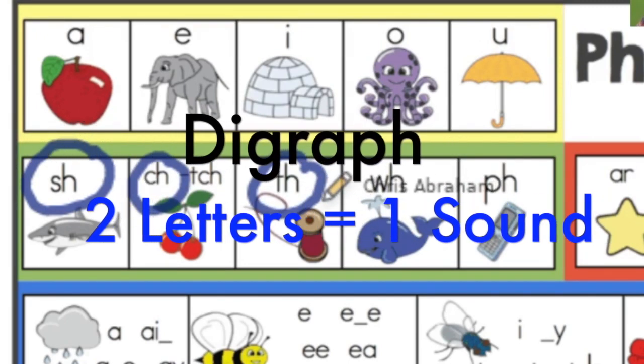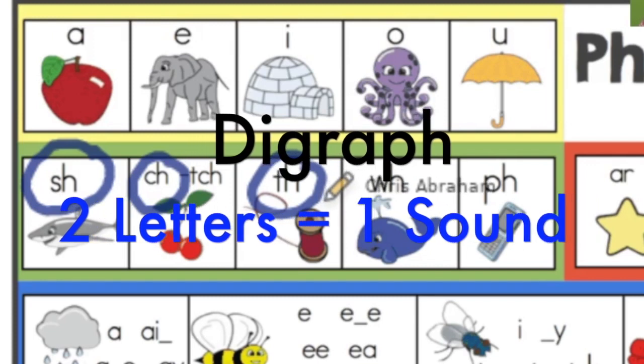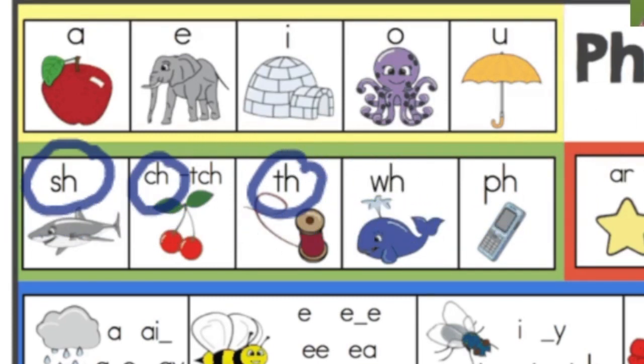Now these are called digraphs. A digraph is anytime we have two letters that match up with one sound, or one phoneme. When it's two consonants, like the SH in shark, we call these consonant digraphs.